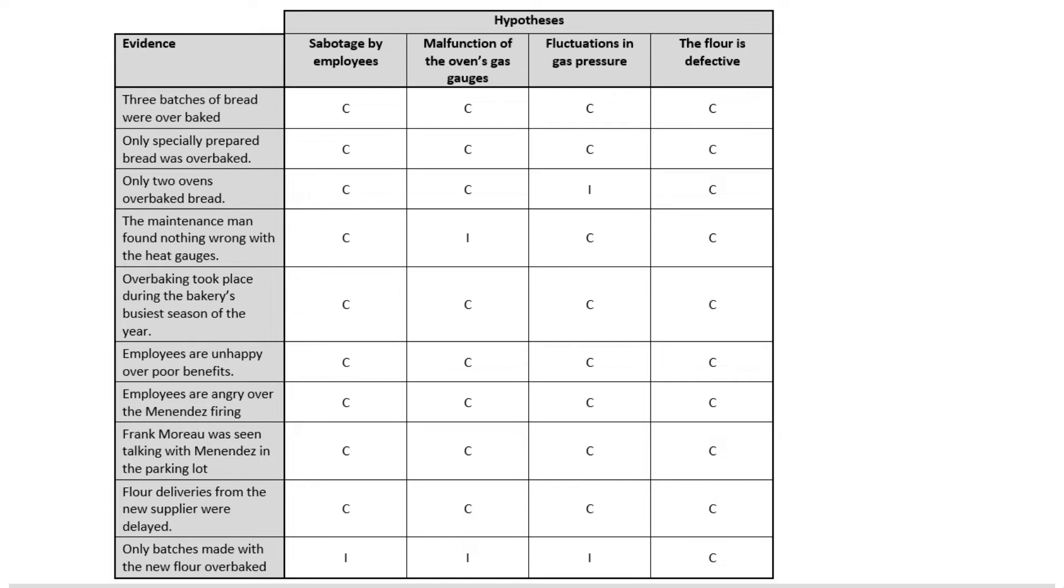Here I've added one more piece of evidence, another row in our matrix that notes that only batches made with the new flour over baked, and that seems to point pretty strongly toward the flour being defective. We can work the matrix as we normally would. Sabotage by employees, would the employees only have sabotaged bread where this new flour had been mixed in? Well I suppose it's possible, but that actually seems pretty unlikely that they would only target bread with a new flour when there are other batches that could have been targeted as well.